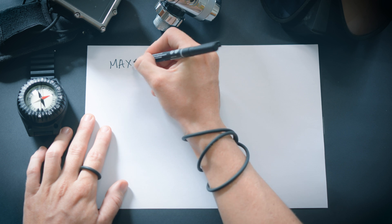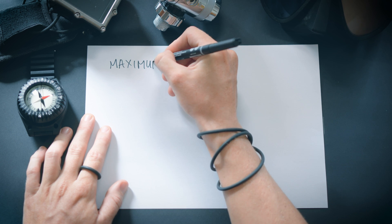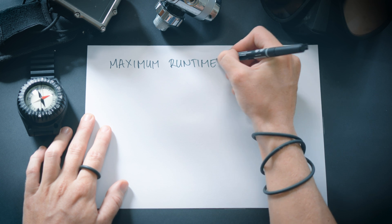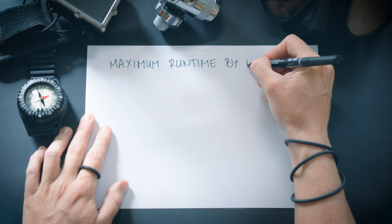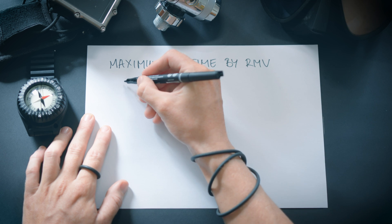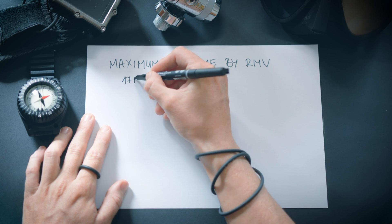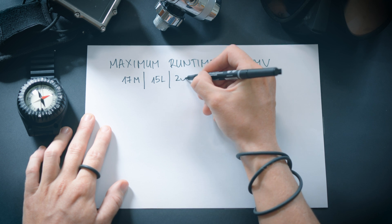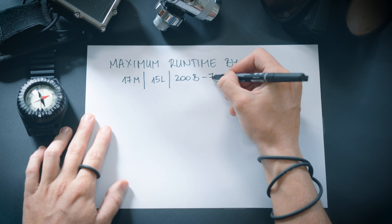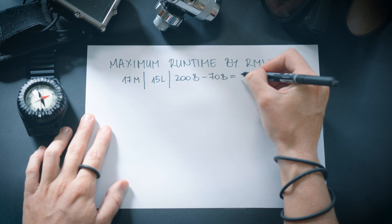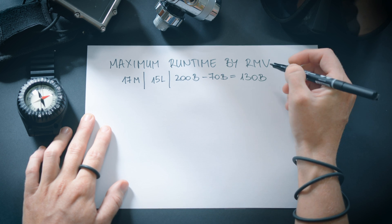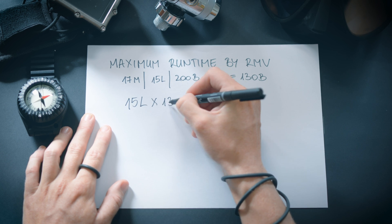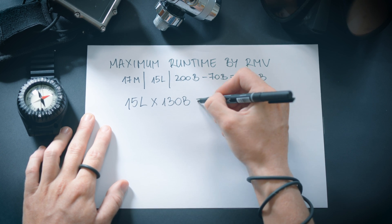Now, to illustrate how you can apply this information to your gas planning, let's walk through an example. We recommend using the baseline SAC rate and the maximum planned depth for a conservative approach. Since we have our RMV in liters, it can be used for calculations regardless of tank size. Assume we're planning a dive to a maximum depth of 17 meters, equipped with a 15-liter tank filled to 200 bars. We intend to reserve 70 bars, leaving us with 130 bars of available gas. Multiplying the tank capacity by the available pressure gives us 1,950 liters — the total available air to execute our dive.